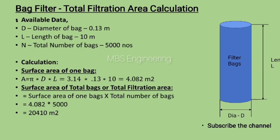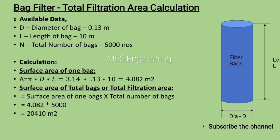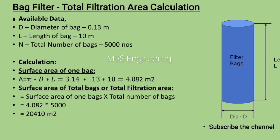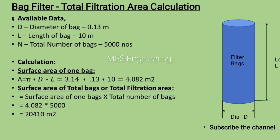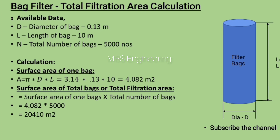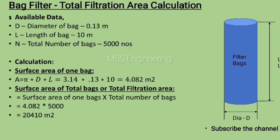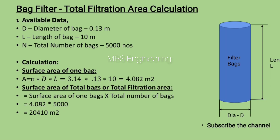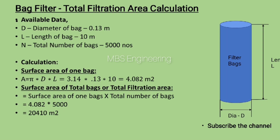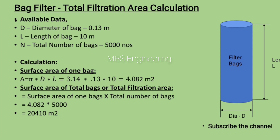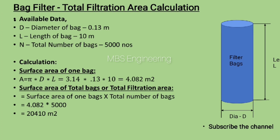Based on the above equation, the total filtration area of the baghouse is 20,410 square meters. Thanks for watching — kindly subscribe to the channel for more videos.